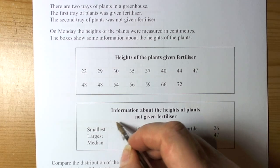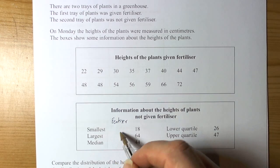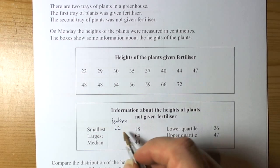So the smallest - this is with fertilizer - when we look at the list it's already in size order, so 22. The largest was 72.